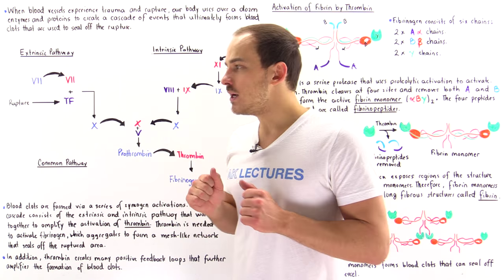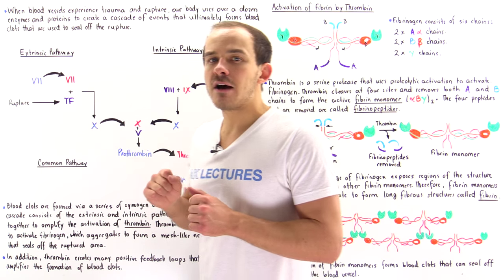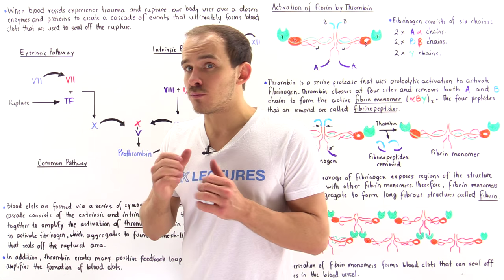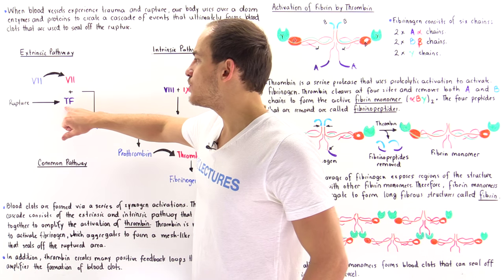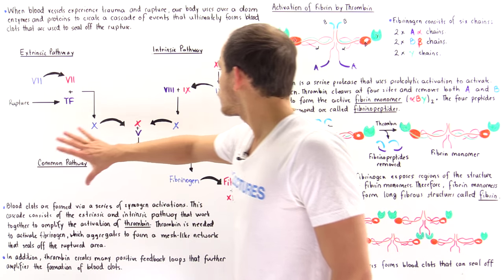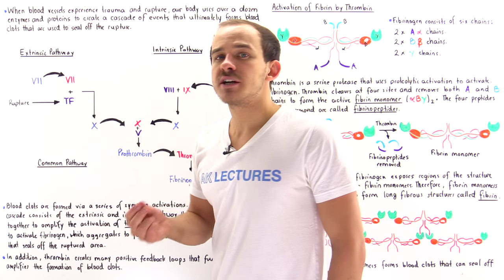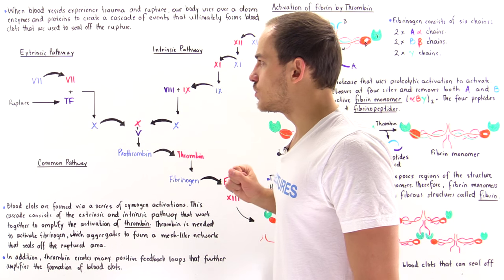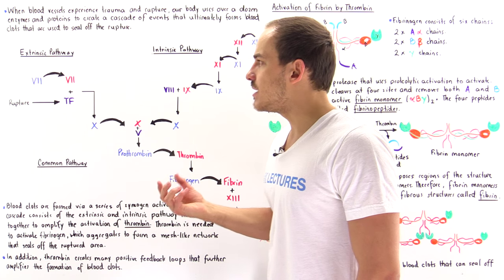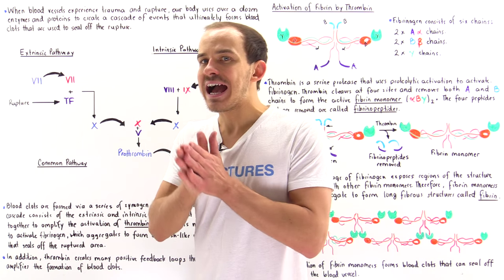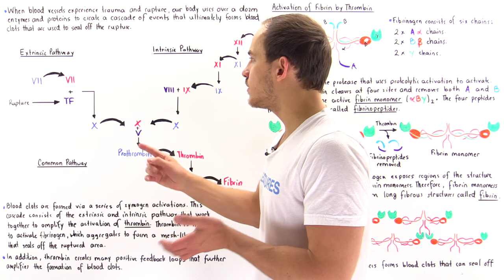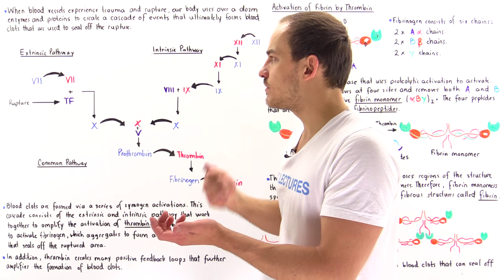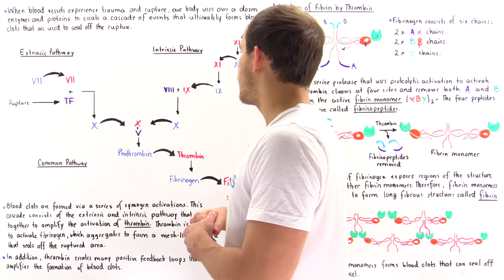In the extrinsic pathway, as a result of that cut in the blood vessel, we have a glycoprotein found in the membrane of that blood vessel that is exposed — that integral glycoprotein is known as tissue factor or TF. In this diagram, the purple molecules are simple proteins, the blue molecules are zymogens — enzymes in their inactive form — and the red molecules are the active form of enzymes.